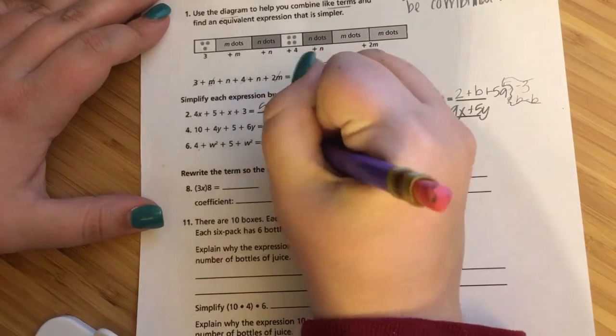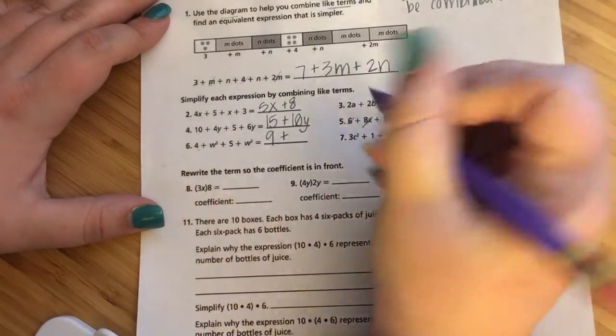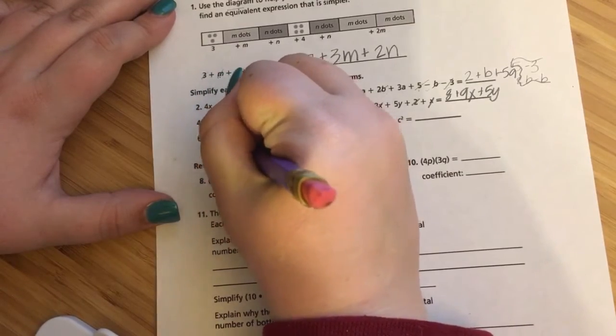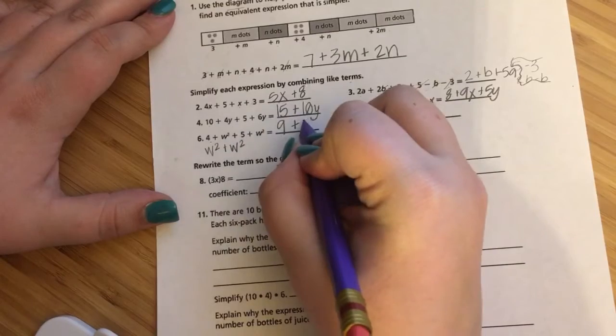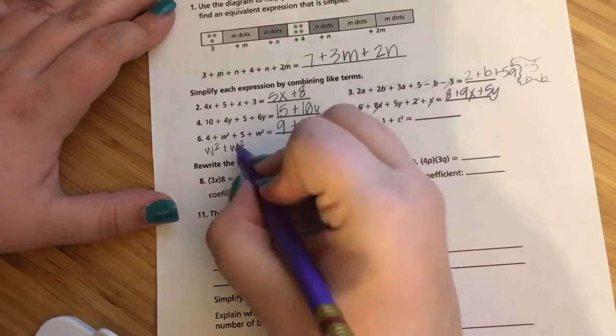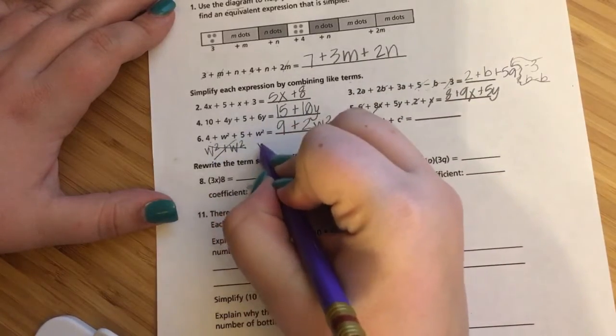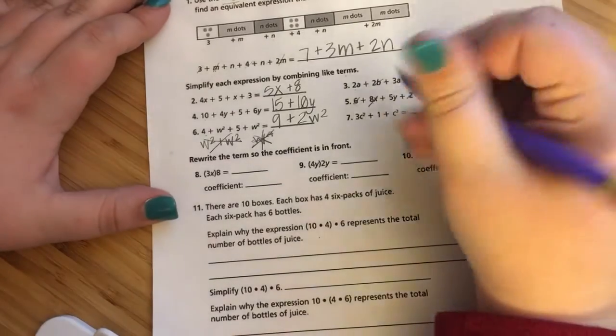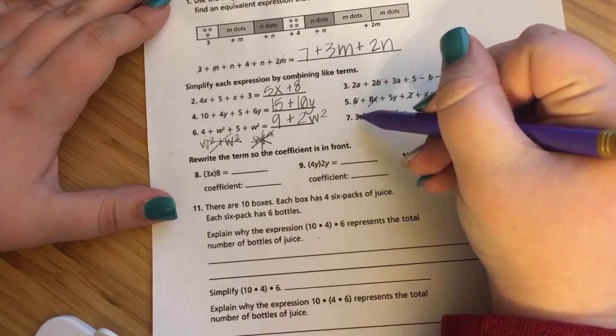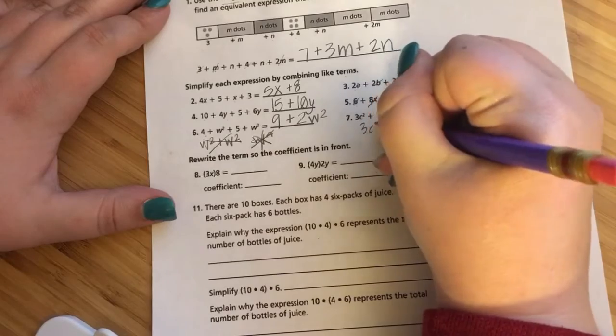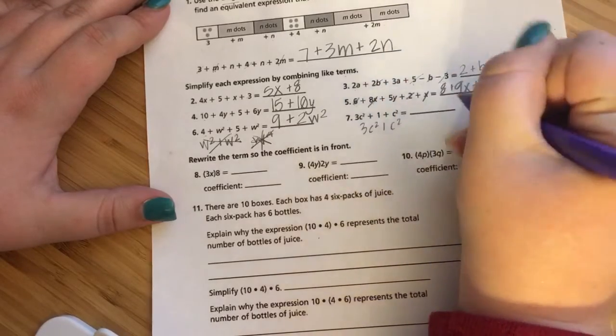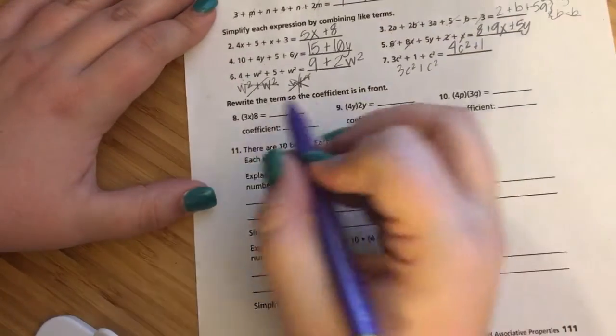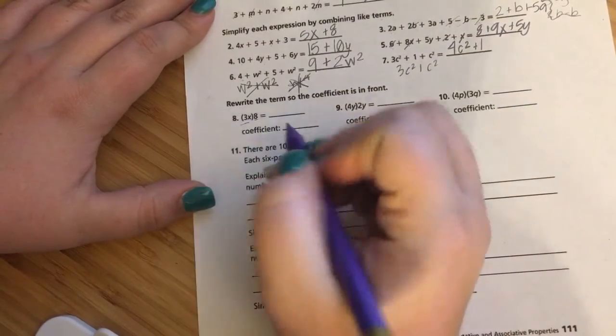4 plus W squared plus 5 plus W squared. So I know 4 and 5 is 9, but I have 2 sets of W squared. That does not make it W to the fourth power. It's like saying 2 times W squared or 2W squared. I can't make it 4W. That's just not what it works when I have an exponent. So it's 9 plus 2W squared. Number 7. 3C squared plus C squared. Well, remember, it's like having separate groups. So I have this 3C squared, and I add one more C squared to it. And I get 4C squared plus 1.